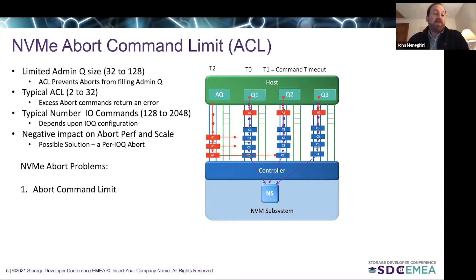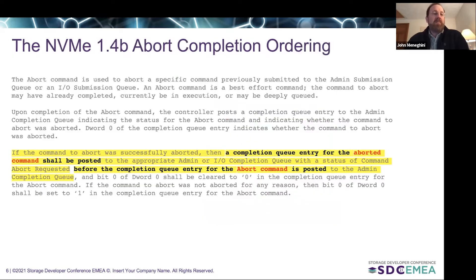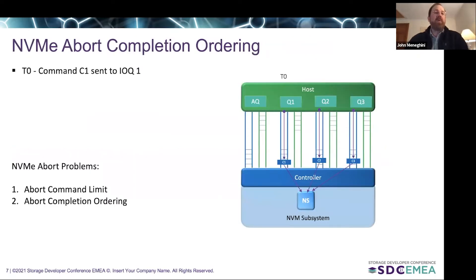One possible solution to this problem would be to provide a per IOQ abort mechanism. The next thing I want to talk about is what I call the abort completion ordering problem. The NVMe spec abort command currently has a strict ordering requirement — highlighted in bold — and it is something that creates problems with the abort protocol itself.